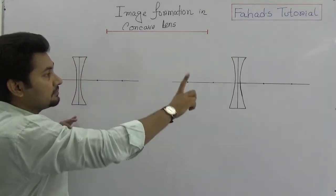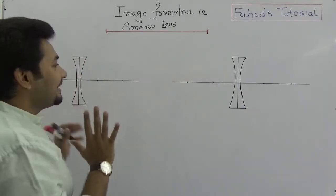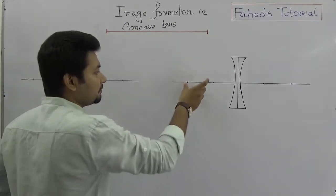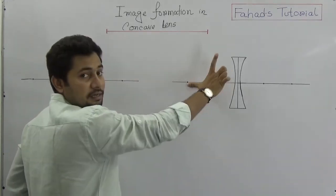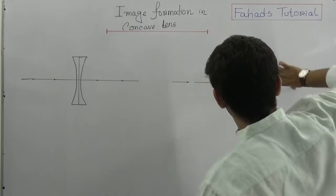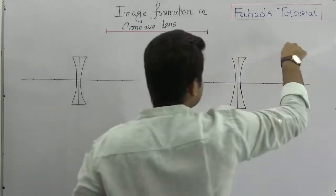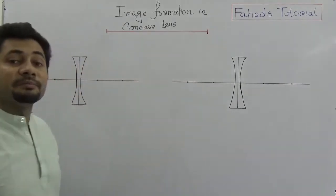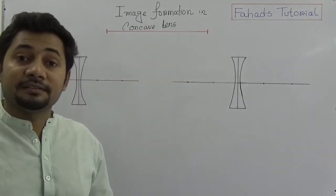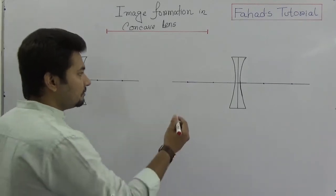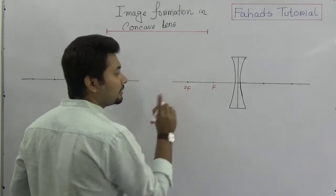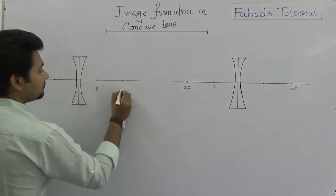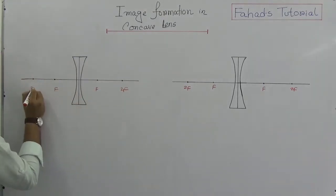I'm drawing freehand so it might not be perfectly accurate, but when you draw make sure it is accurate — draw using your compass from each point, then use a scale to make straight lines for much more accuracy. So we know this is F and this is 2F, and similarly on the other side F and 2F.